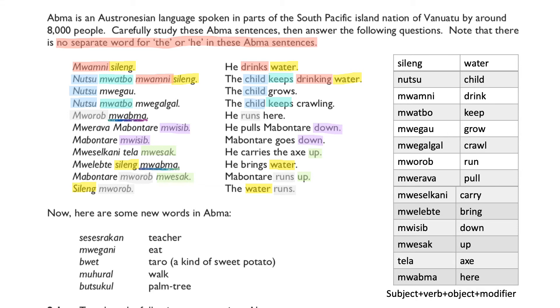Good news is that verbs and examples are all in present tense, so we don't have to worry about that. However, we will come across challenging tenses at some point when doing harder questions.